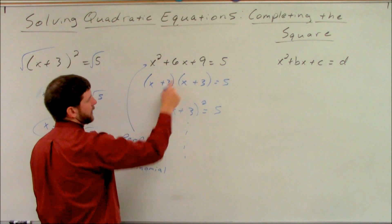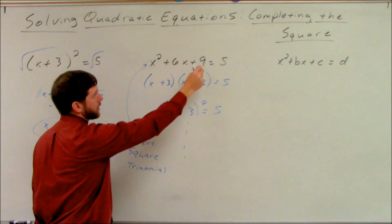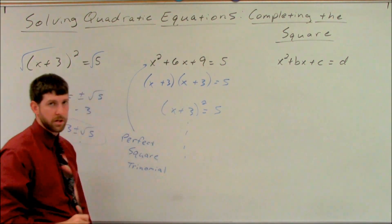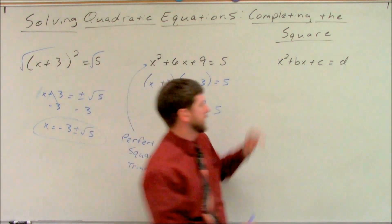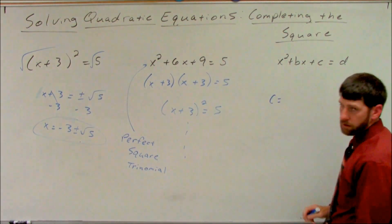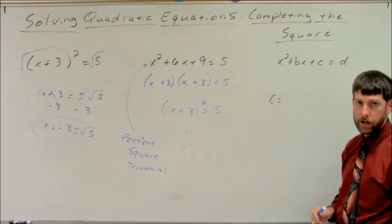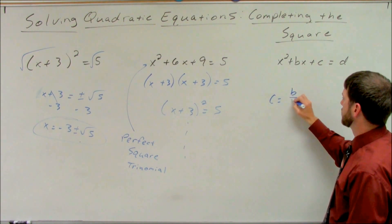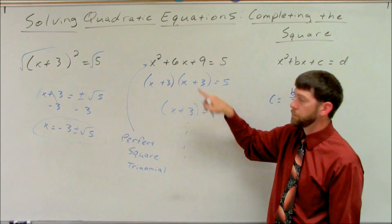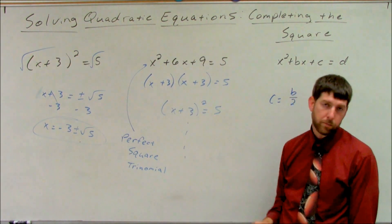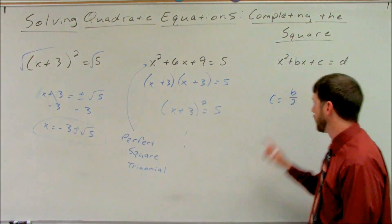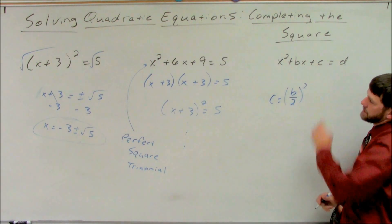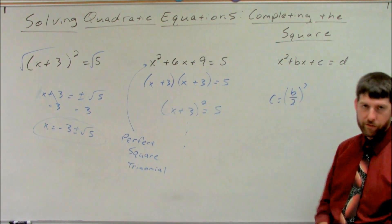When we factor with a lead coefficient of one, we break down the last term into factors that add to give us the middle term — it needs to multiply to give us the last, and add to give us the middle. In terms of B and C: C needs to factor into two numbers that add to give us B and multiply to give us C. So it ends up being half of B — we break it into equal parts. It's got to be half of this middle number because there are two of them to add up. So half of B, squared, gives us the actual C. The constant has to always be B over 2 squared to have a perfect square trinomial.